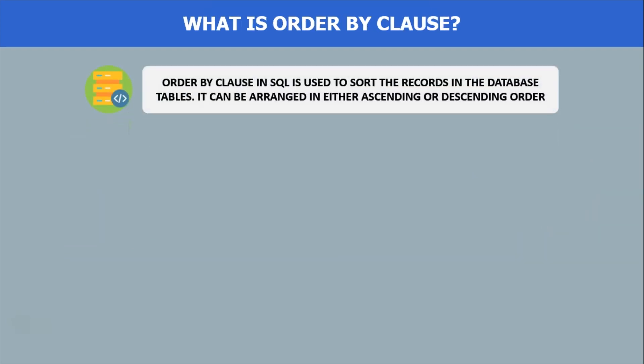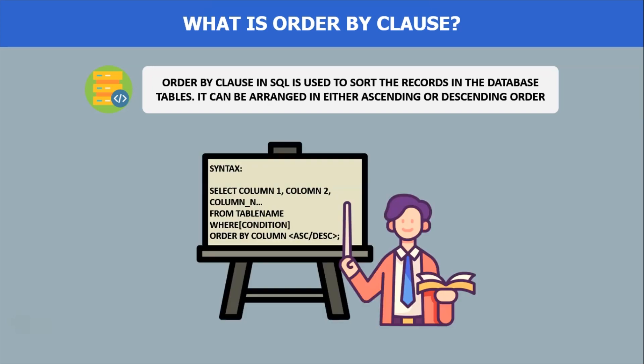So what is the ORDER BY clause? The SQL ORDER BY clause allows you to sort the results of a query based on a specific column or group of columns. That means it helps you to reorder the data present in the tables by one or more columns. This sorting can be either ascending or descending order.